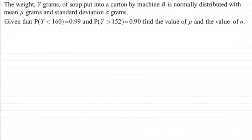This is an excellent example to do in trying to find the mean mu and the standard deviation sigma of a normal distribution. What we've got here is the weight Y grams of soup put into a carton by machine B. It's normally distributed with mean mu grams and standard deviation sigma grams. We're given that the probability that Y is less than 160 is equal to 0.99 and the probability Y is greater than 152 is equal to 0.90. And what we've got to do then is find the value of the mean mu and the value of the standard deviation sigma.